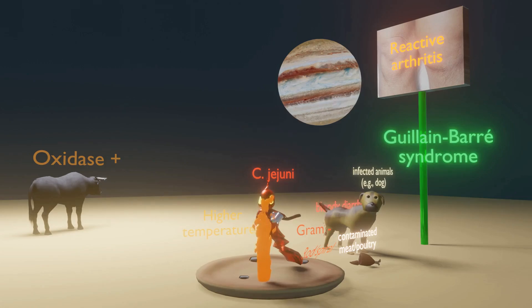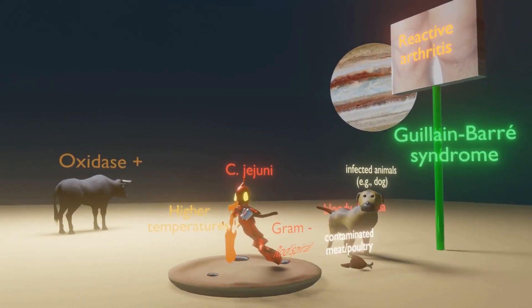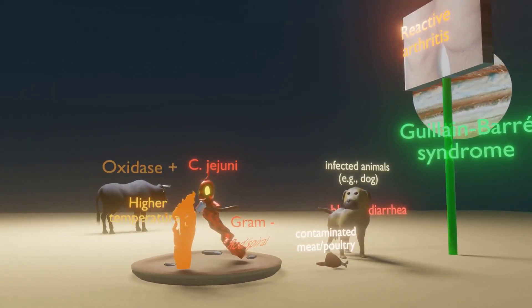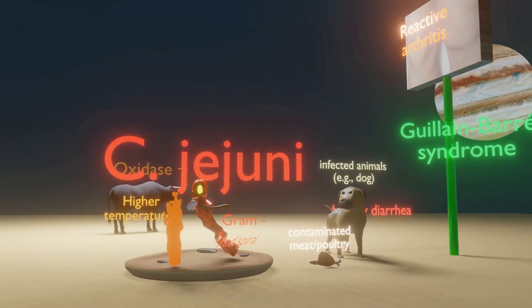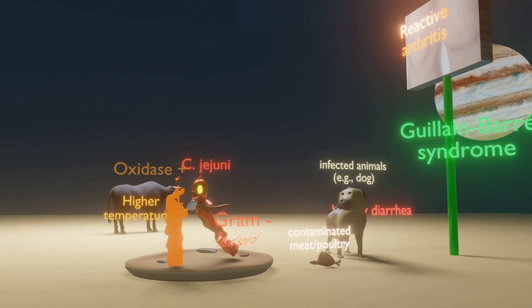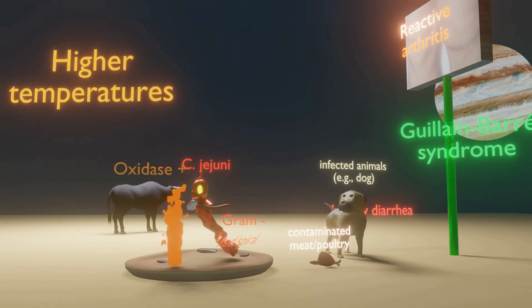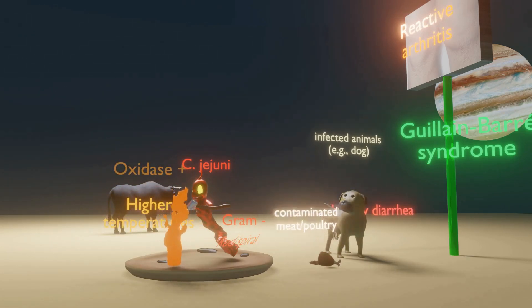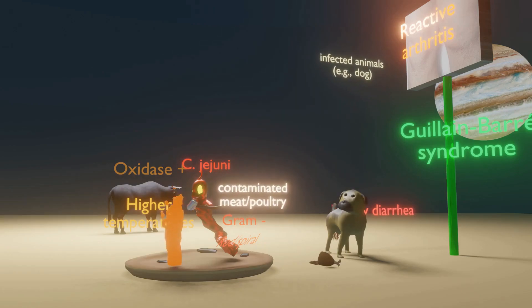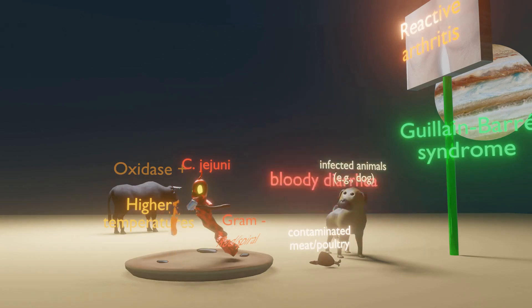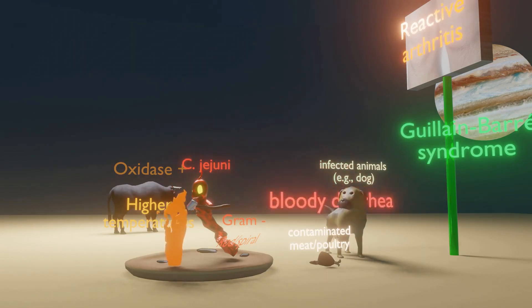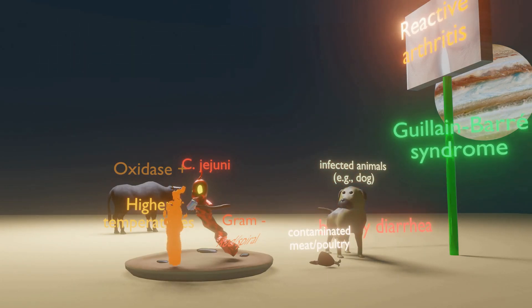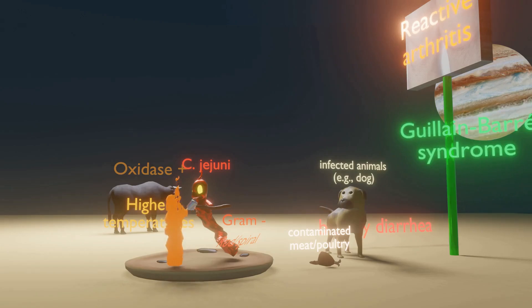The sign of reactive arthritis on top of the green bar reminds us of the association with reactive arthritis. In summary, Campylobacter jejuni is a gram-negative spiral-shaped rod that grows at high temperatures, is oxidase positive, is transmitted through contaminated meat or poultry or through animals, causes an inflammatory bloody diarrhea, and is associated with Guillain-Barré syndrome and reactive arthritis.